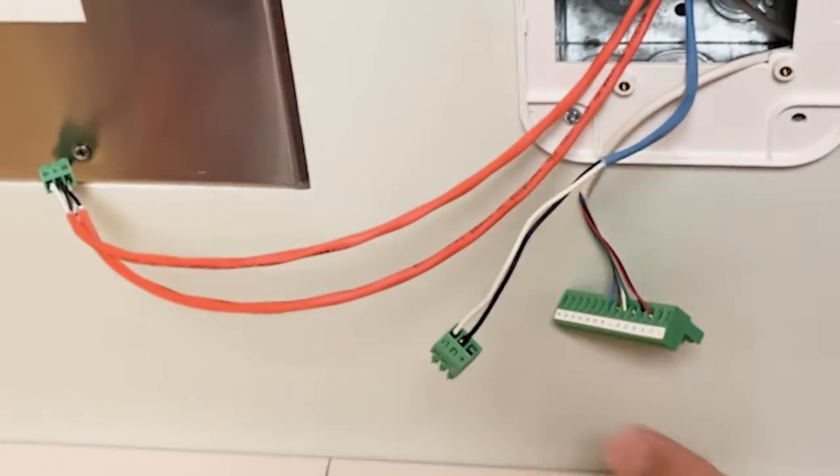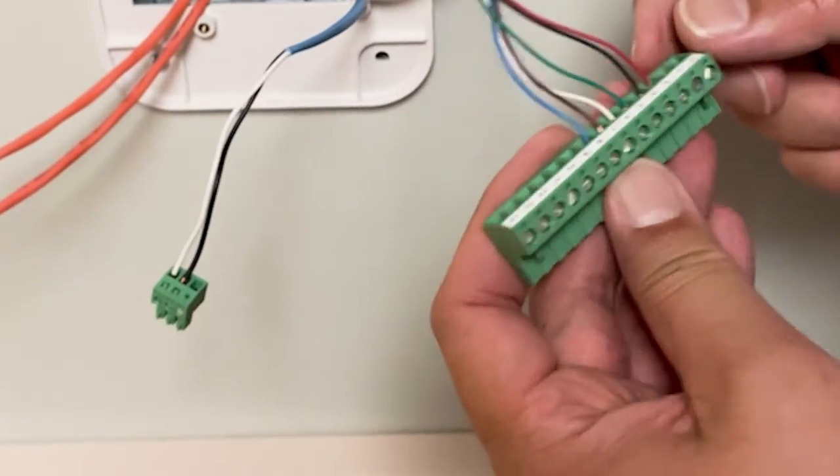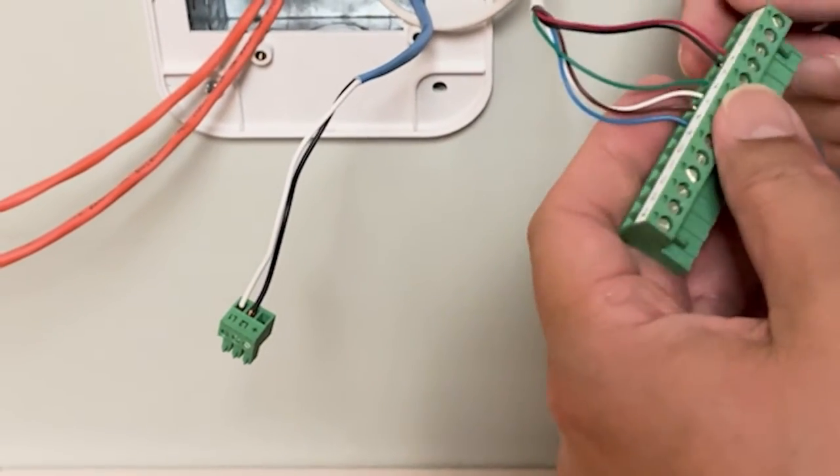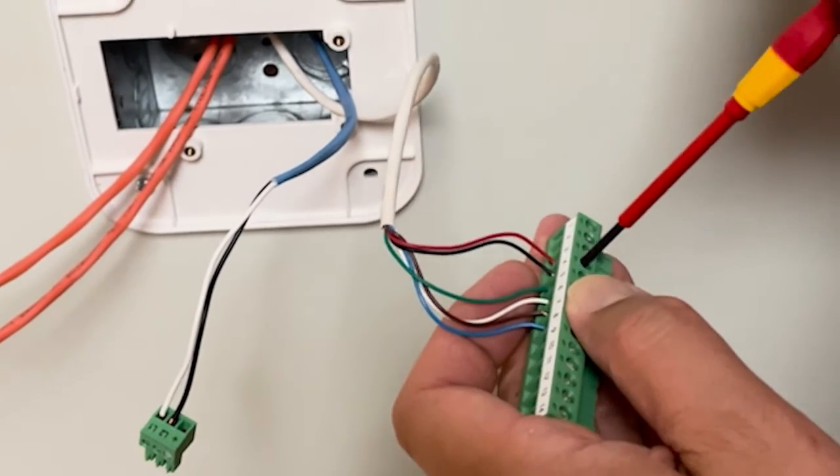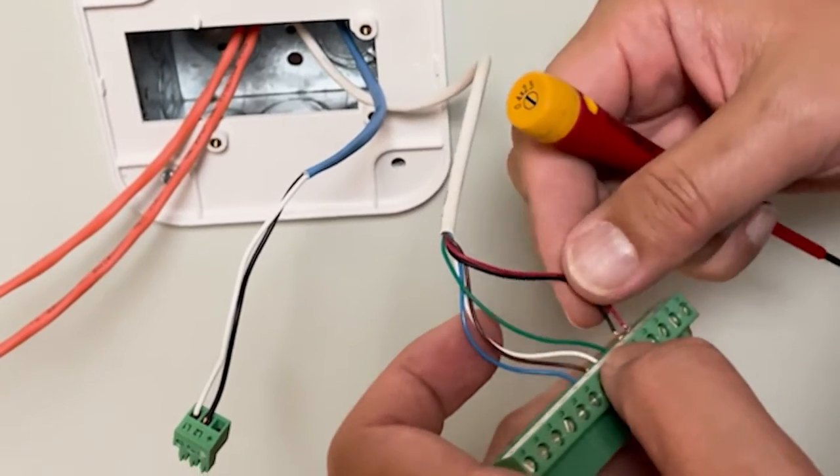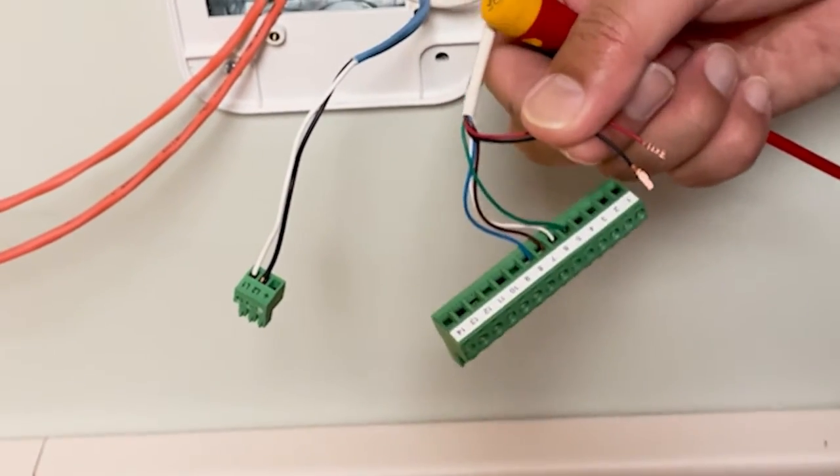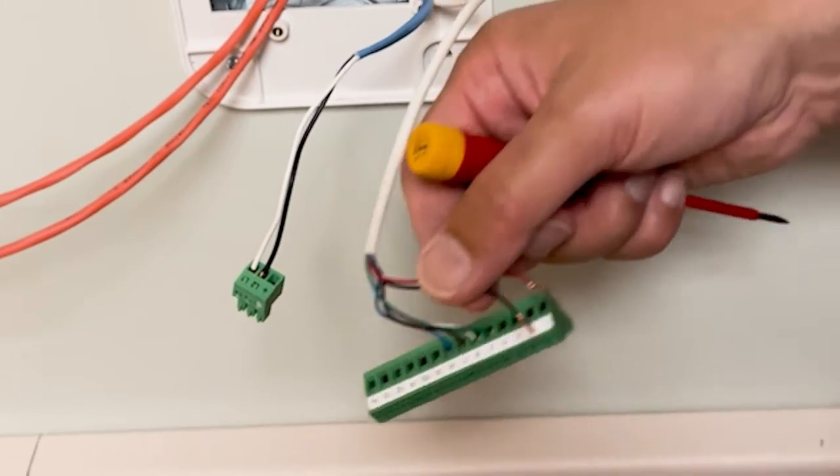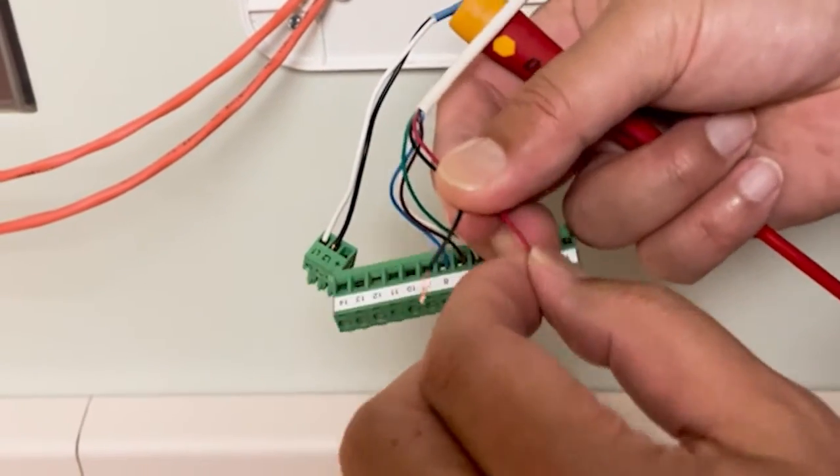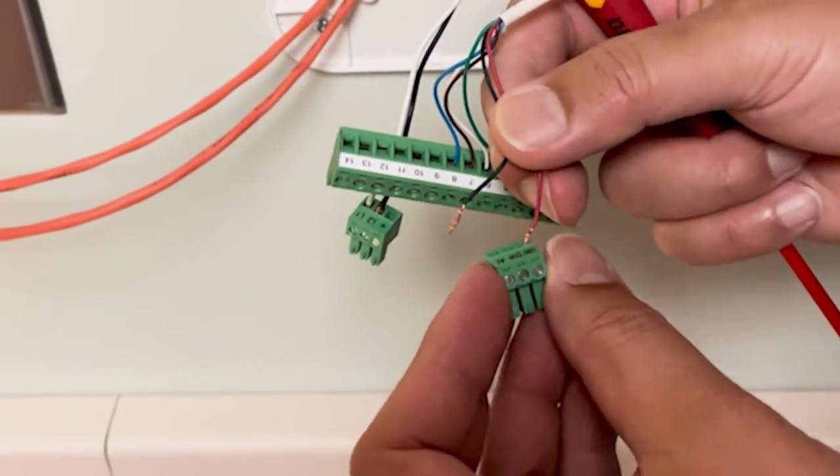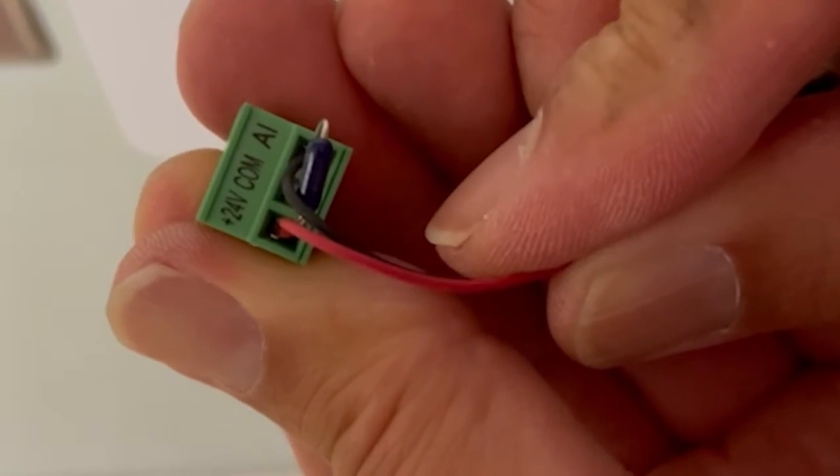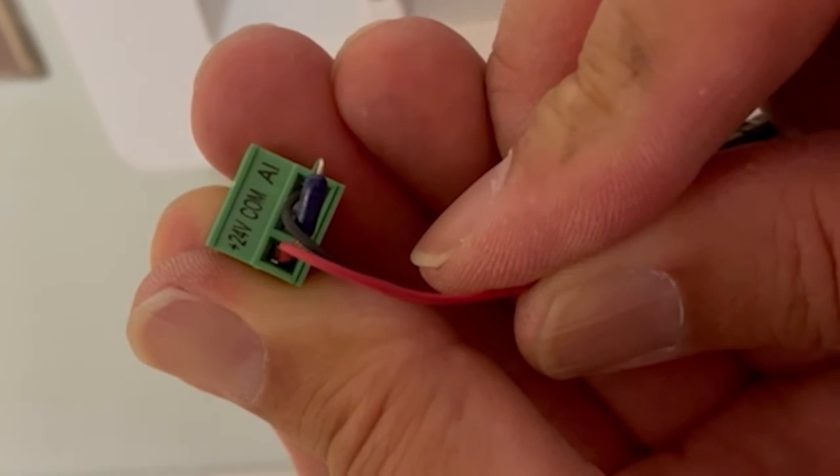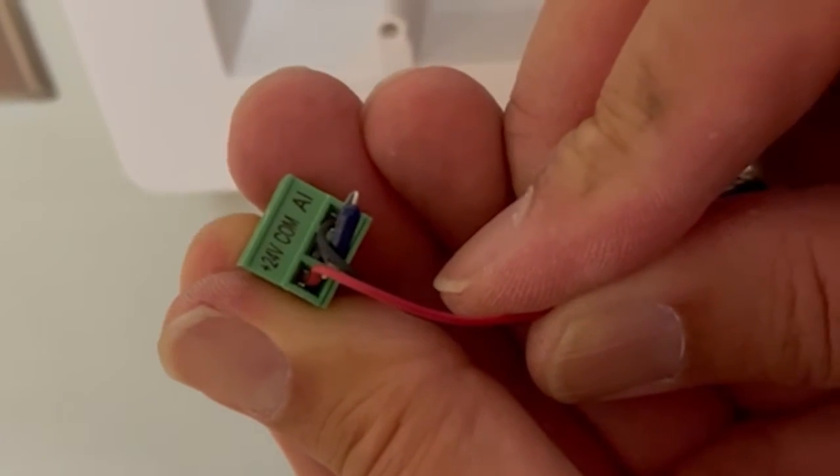Next thing to do is connect our sensor to its removable connector. We chose the black and the red up top for that, so we're going to disconnect those. Now you can see we have the common and analog input with the resistor across it, and the red in the 24 volts and the black on the analog input.